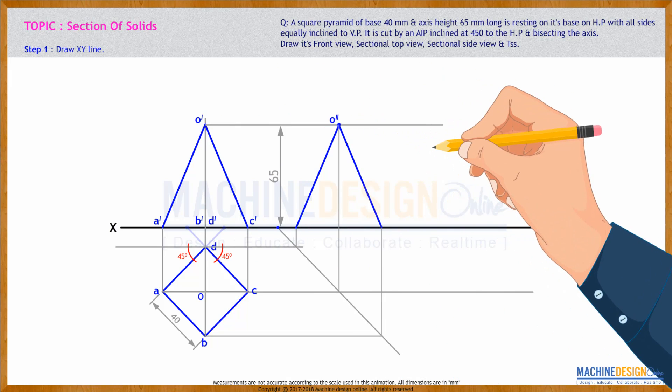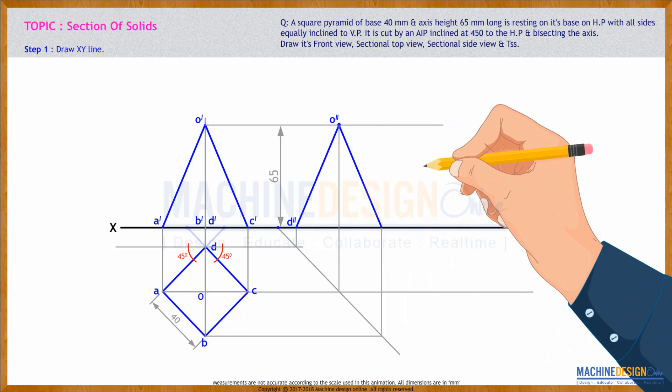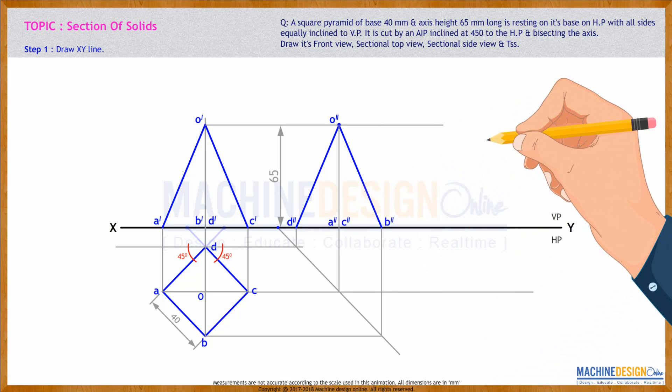Side view will be double dash. O double dash, this is B double dash, A double dash, C double dash, B double dash.